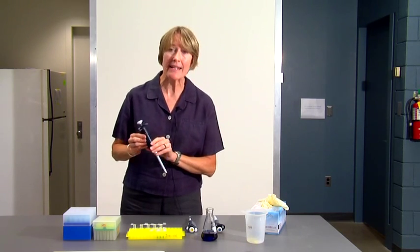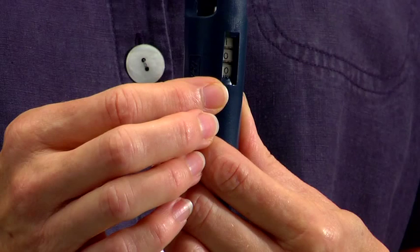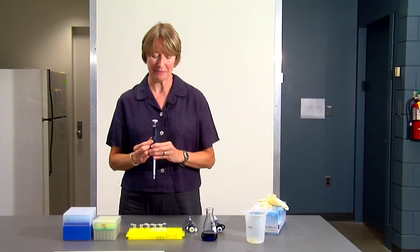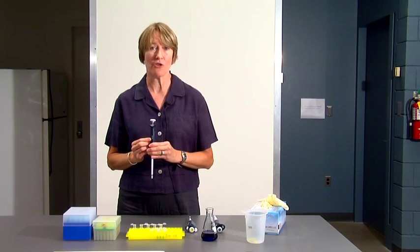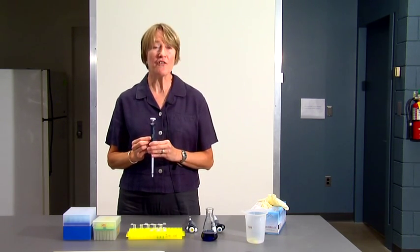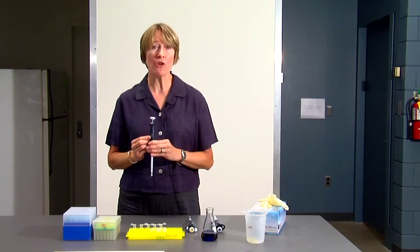On the P200, you have three black numbers on the dial, and essentially what you see is what you get. If the pipetter is set at 100, that will measure 100 microliters. If you wanted 200 microliters, you would set it at 200. 50 microliters would be 050.